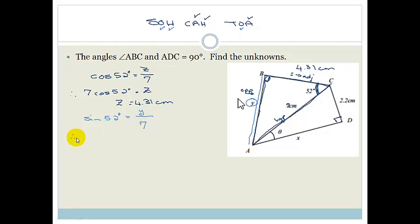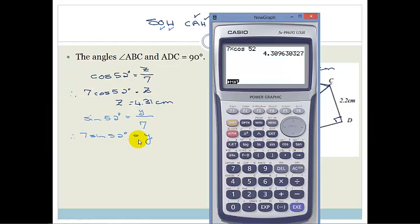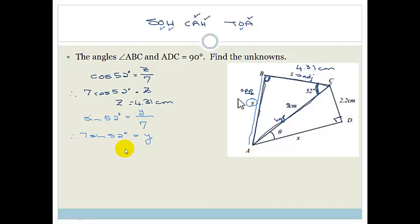Therefore we can say that 7 sine of 52 degrees is equal to Y. And again we just pop out our calculator and we go 7 times sine of 52 degrees. And we get 5.52. So therefore Y is equal to 5.52 centimeters. So now we have that Y is 5.52 centimeters.